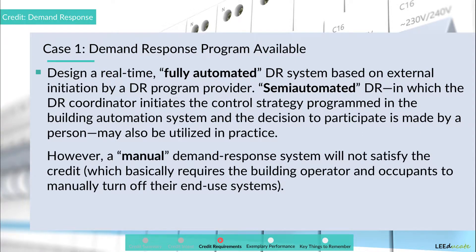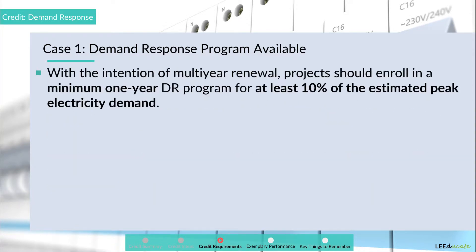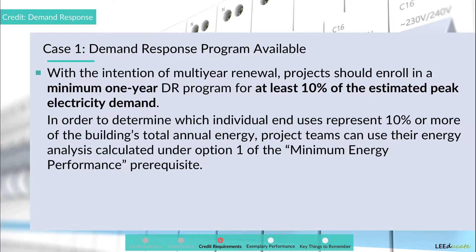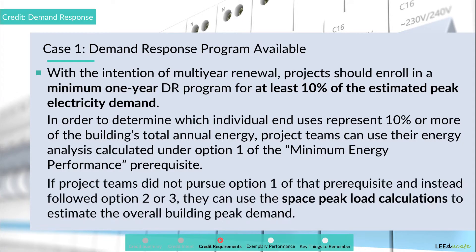However, a manual demand response system will not satisfy the credit, which basically requires the building operator and occupants to manually turn off their end-use systems. Activity 2: with the intention of multi-year renewal, projects should enroll in a minimum one-year DR program for at least 10% of the estimated peak electricity demand. In order to determine which individual end-uses represent 10% or more of the building's total annual energy, project teams can use their energy analysis calculated under Option 1 of the minimum energy performance prerequisite. If project teams did not pursue Option 1 and instead followed Option 2 or 3, they can use the space peak load calculations to estimate the overall building peak demand. This is also important to know for exam purposes.